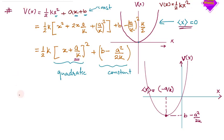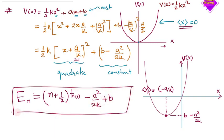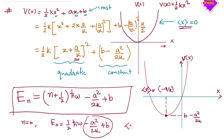So how does this affect the total energy of the system? The new energy eigenvalues are En = (n + ½)ℏω + (B − A²/2k). For the ground state, n = 0, the ground state energy becomes ½ℏω + (B − A²/2k). This much energy is shifted from the original ground state. And the mean value of x for this potential is −A/k.